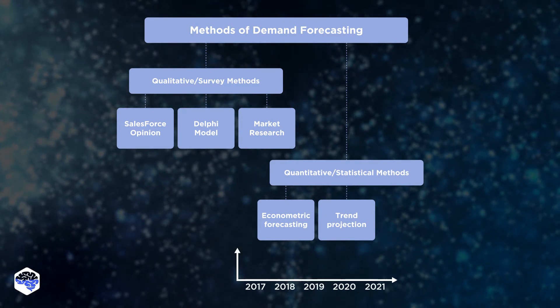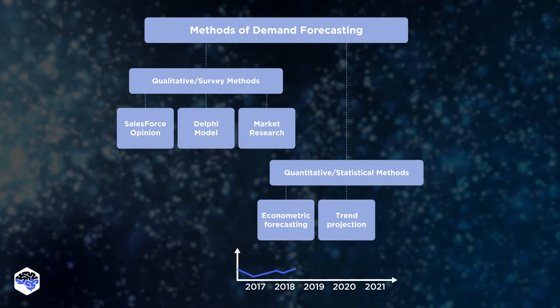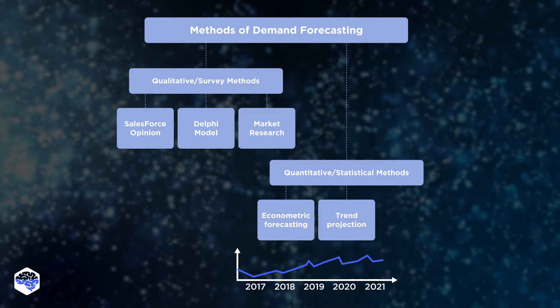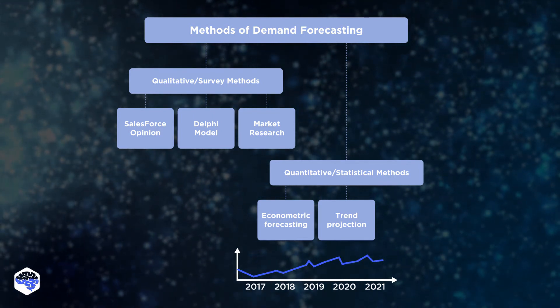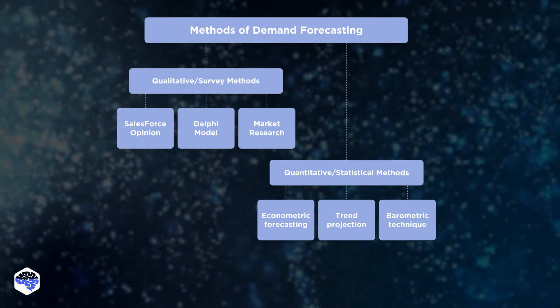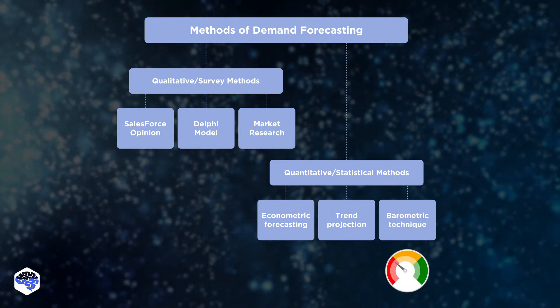The next comes trend projection method. To perform it, you need sales data with a history of 20 to 24 months. Analyzing it, you get a projected demand for a specific product category. Barometric technique involves recording current events for the prediction of the future.